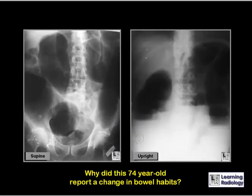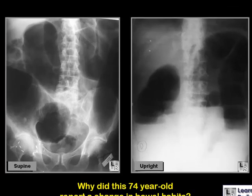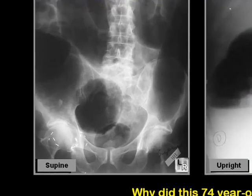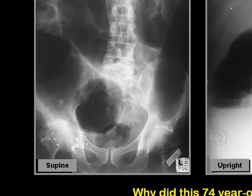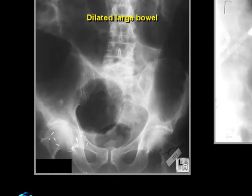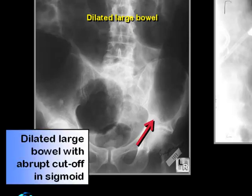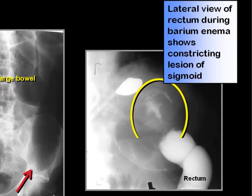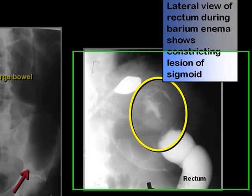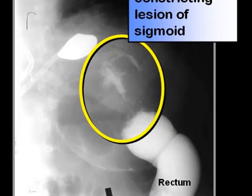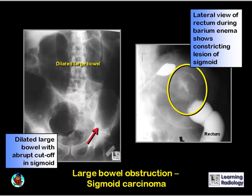Why did this 74-year-old report a change in bowel habits? On supine and upright views, the dilated bowel is large bowel with an abrupt cutoff in the air column in the distal descending colon. On the lateral view of a barium enema, there is an obstructing annular constricting lesion representing a sigmoid carcinoma, producing a proximal large bowel obstruction.